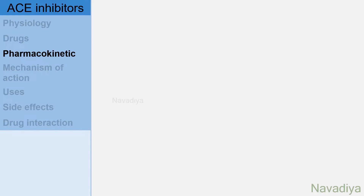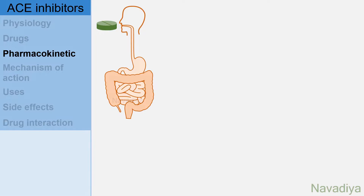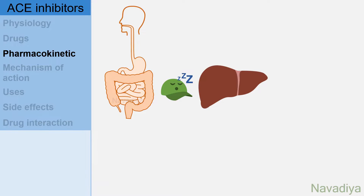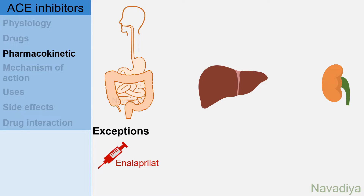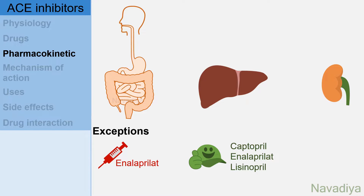Moving to pharmacokinetics. Most of the drugs are given orally in the form of tablets. They are pro-drugs, meaning they are inactive by themselves; in the liver they are activated by esterase enzymes. Elimination occurs mainly by kidney. However, there are few exceptions: enalaprilate is given by IV route only; captopril, enalaprilate and lisinopril are active by themselves; and fosinopril is eliminated by kidney as well as liver.